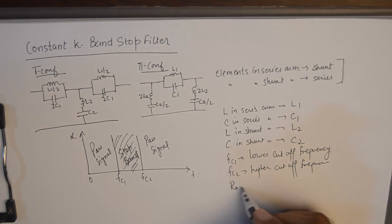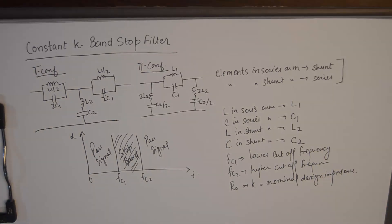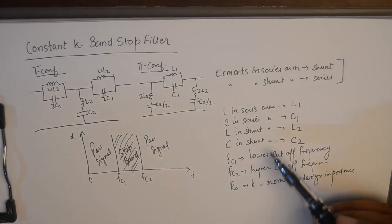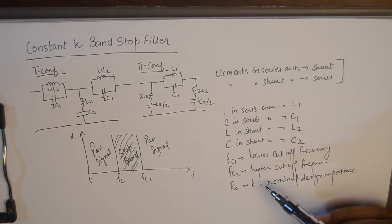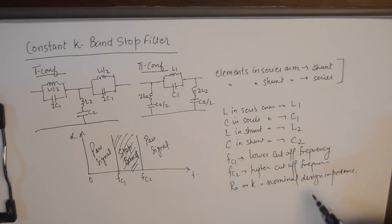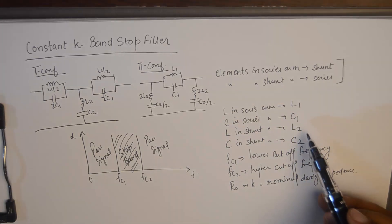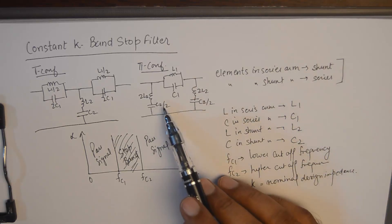And then there is R0 or K which is the nominal design impedance. So these are the parameters which will be used to design a band stop filter in both the configurations. At times you may be given the values of the cut-off frequencies and the design impedance and you'll need to find the values of L and C's to be able to complete the design.